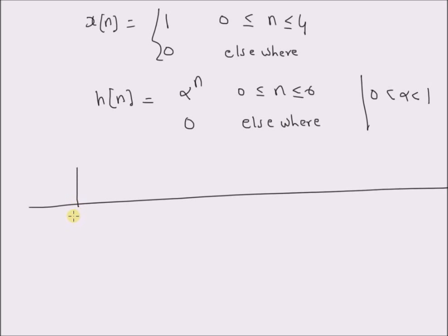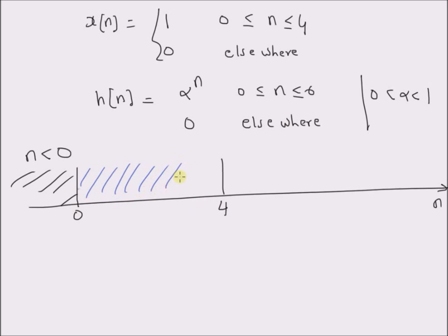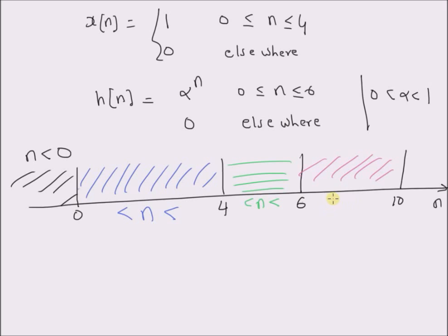The first interval is n less than 0. The second interval is n between 0 and 4. The third interval is for values of n between 4 and 6. The next interval is between 6 and 10. And finally, we have n greater than 10. So we have to calculate the convolution sum in each of these intervals separately.